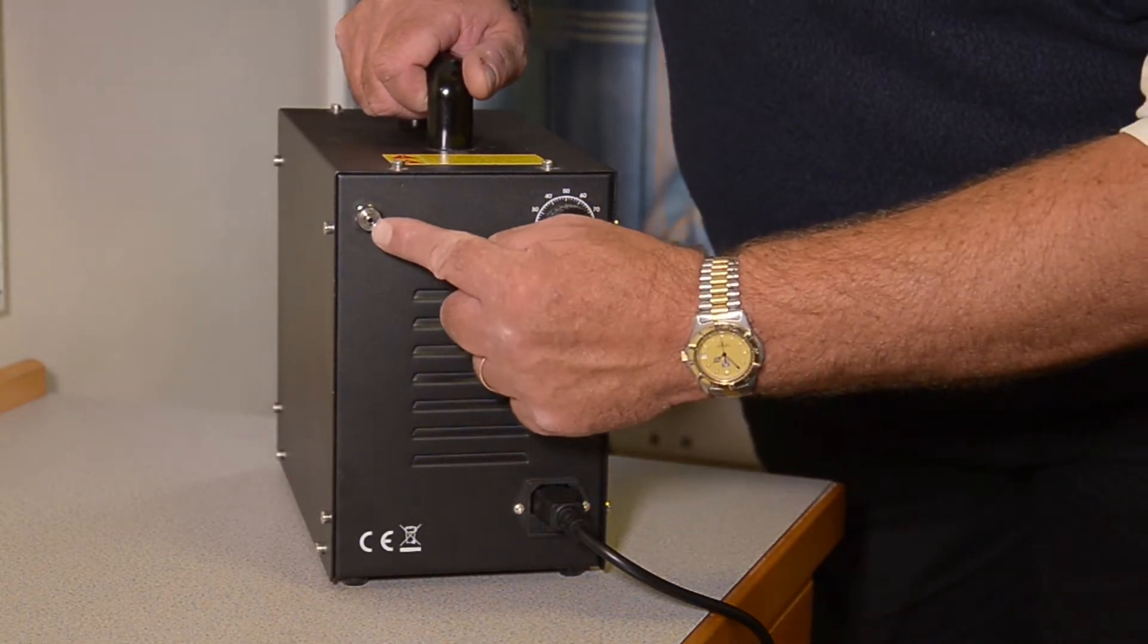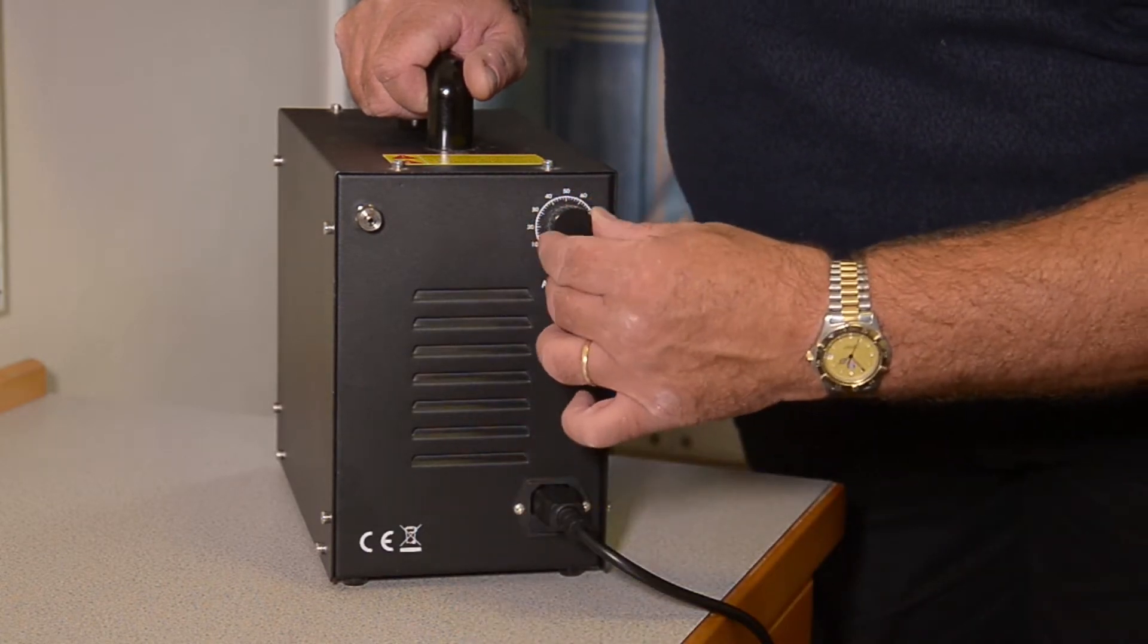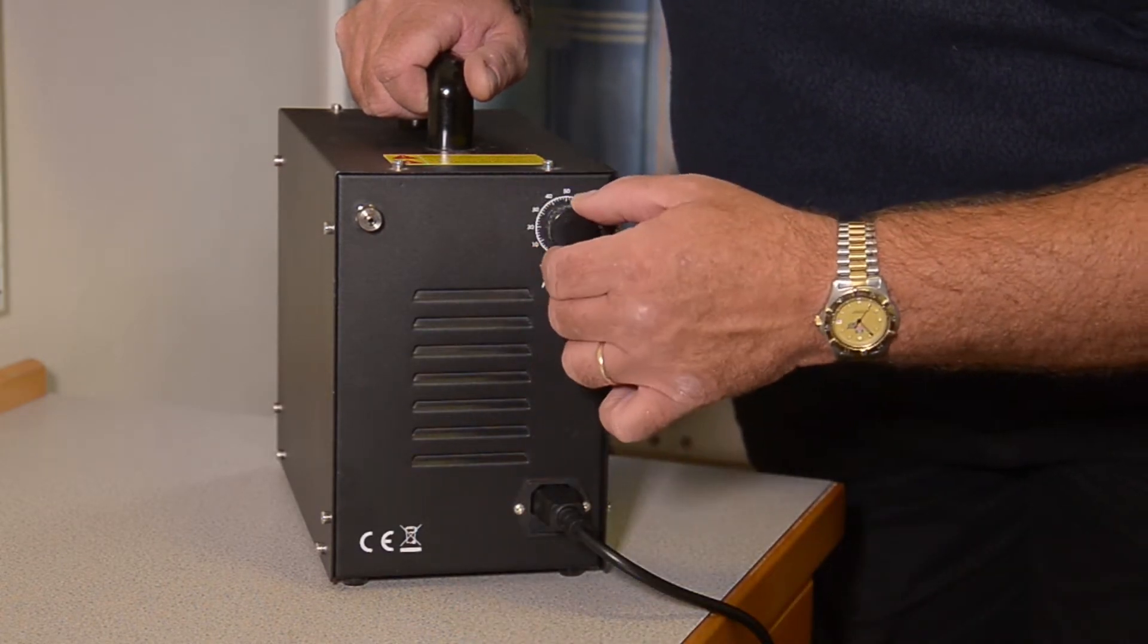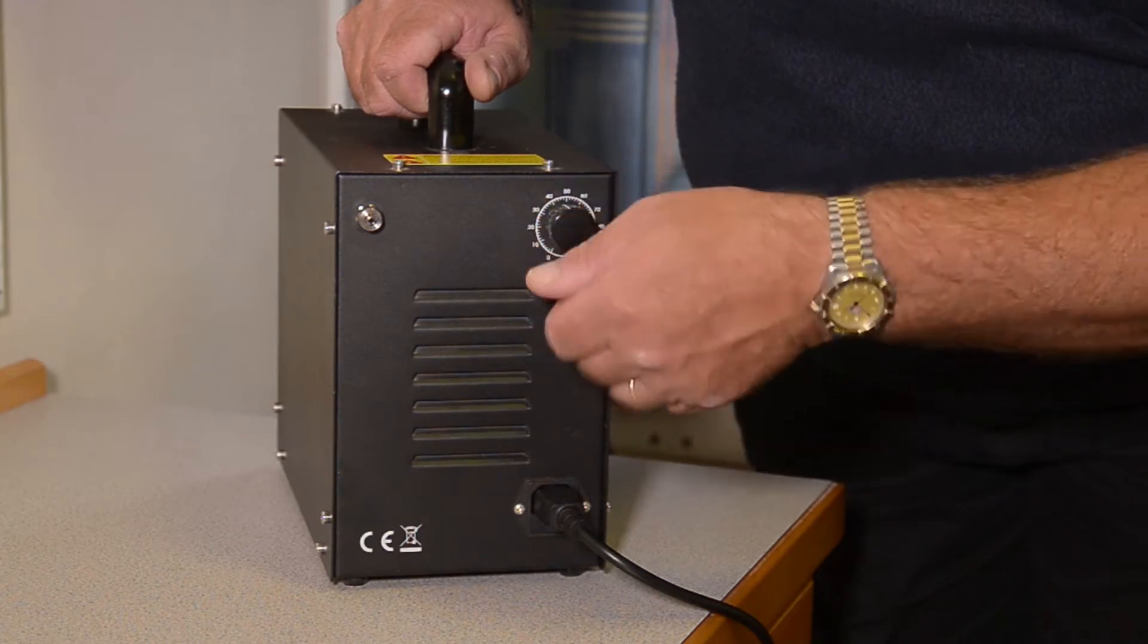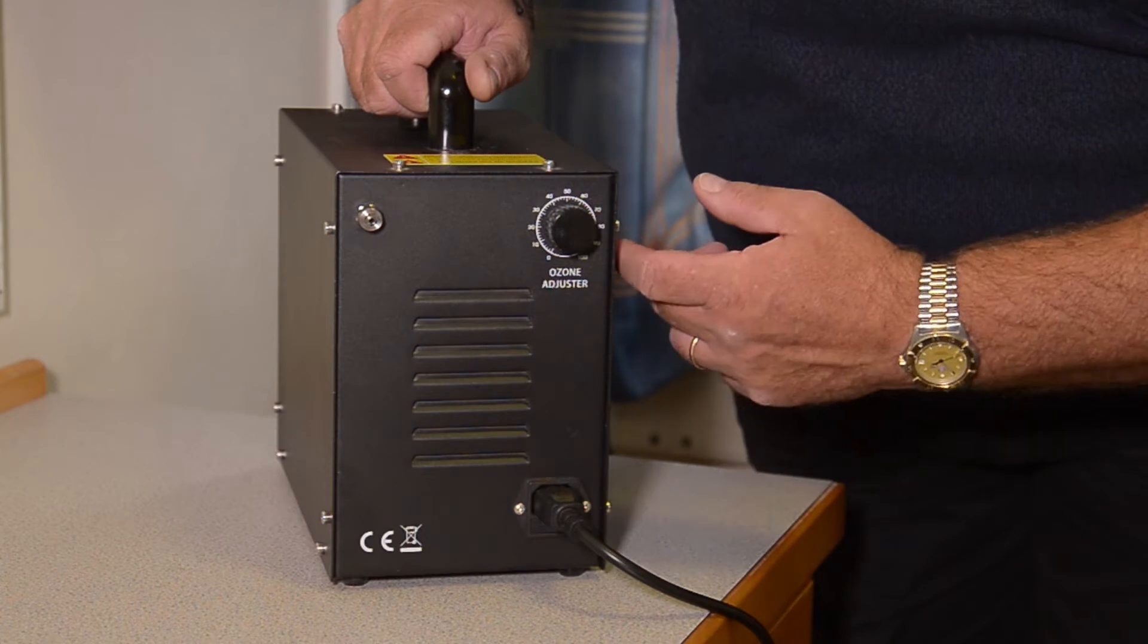Very simple. Ozone output. Power switch. You can adjust the levels of ozone from zero through to full power, which is the full 3g.